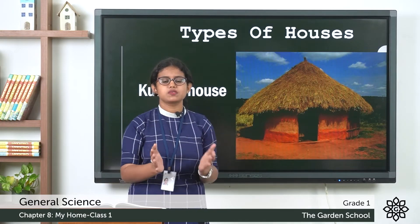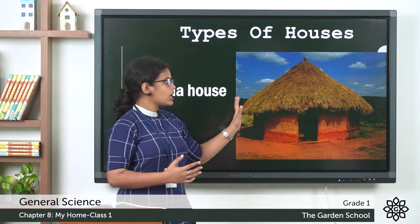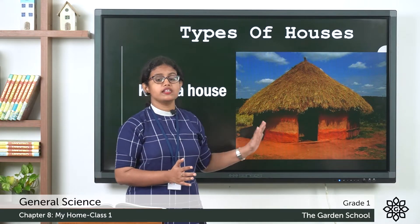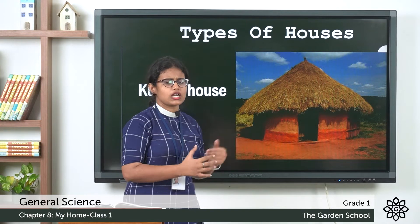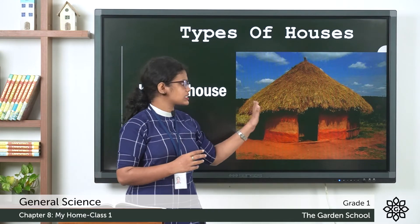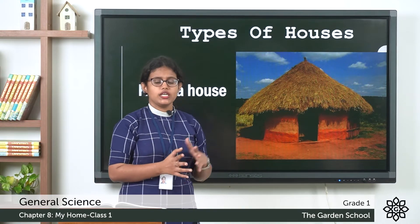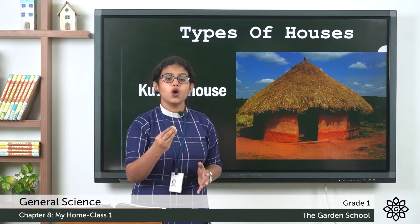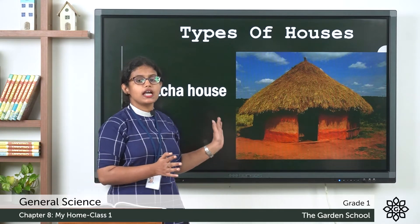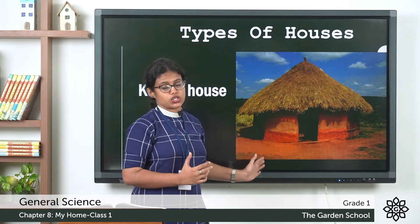Now let's see the different types of houses. If you see this picture, can you say what type of house this is? This is a hut — it is a small house with only one room. A hut is made of mud, sticks, stones, etc. These houses are not strong. This type of house, found in villages, we call a kacha house. Kacha house is not a strong house.